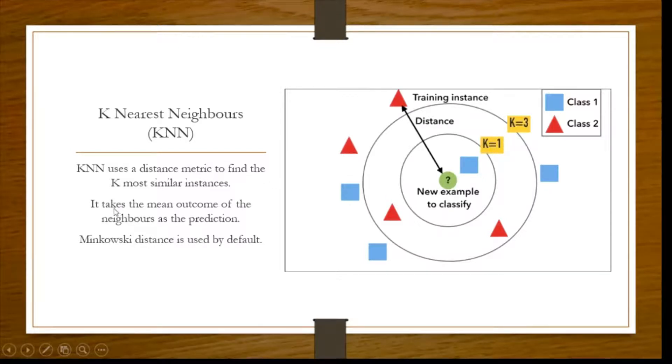What happens is it takes the mean outcome of the neighbors as prediction. So this is how KNN works. And this is a non-linear regression. It is used in iris data set also. So we will see how it works.